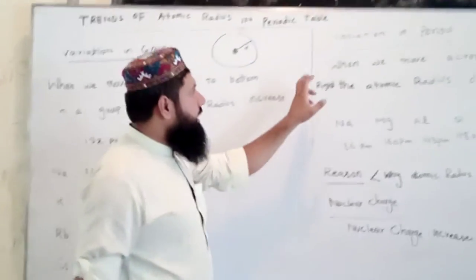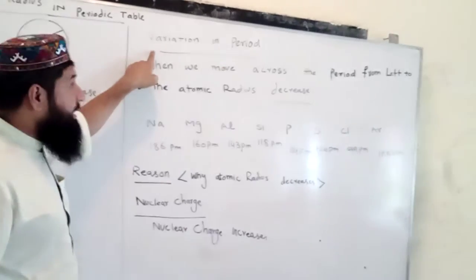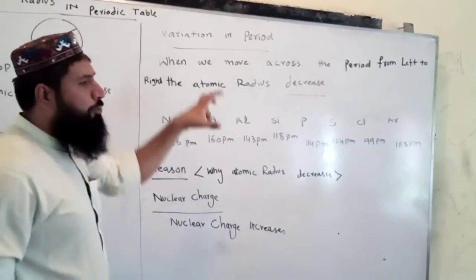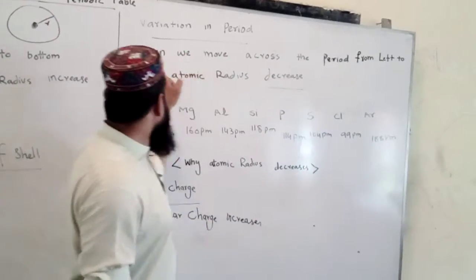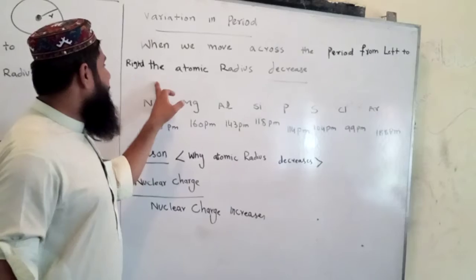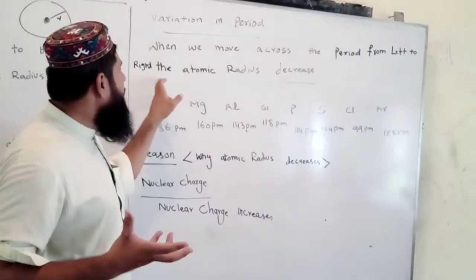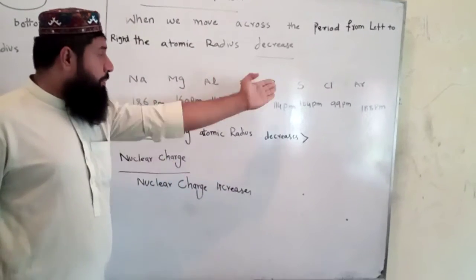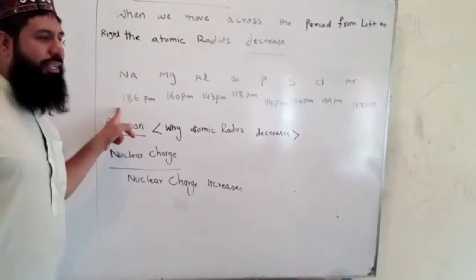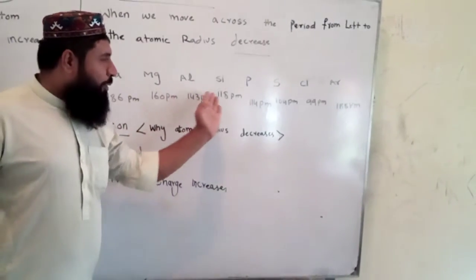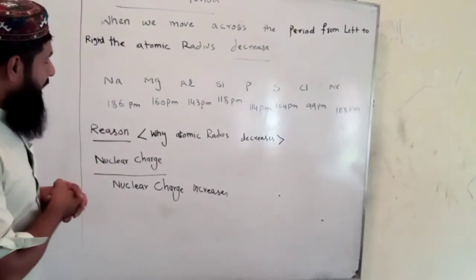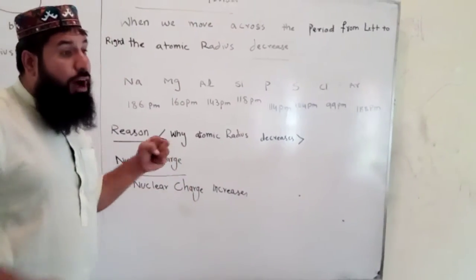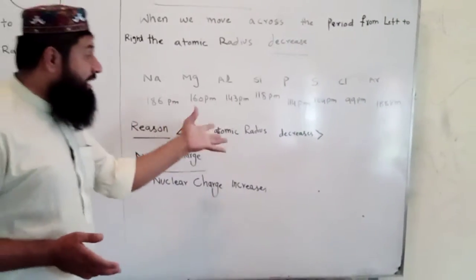Now let's look at the period. What happens to atomic radius when we move across the period from left to right? When we move from left to right in the periodic table, the atomic radius decreases. For example, sodium, magnesium, and aluminum are third period elements. Their atomic radii are 186, 160, and 123 picometers respectively. You can see there is a prominent decrease in atomic radius across these elements.